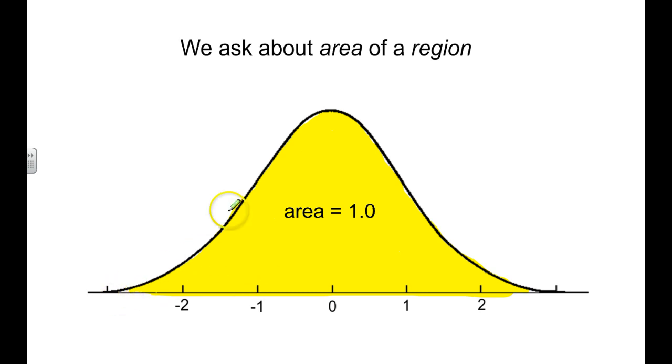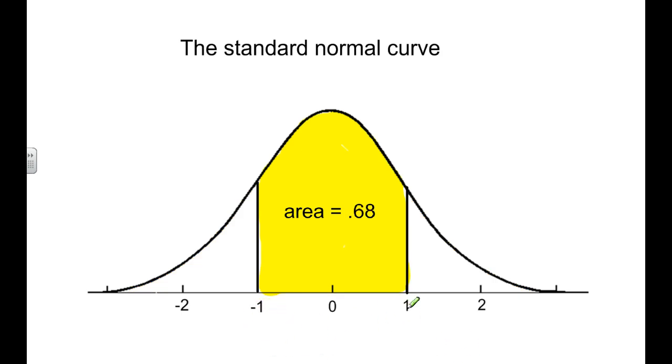Obviously, under the entire curve, the probability is going to be 1.0, or 100%. If we were to take smaller sections, though, common sections, let's say between negative 1 and 1 standard deviation, the area trapped between those two parts of the curve is 0.68, or 68% of the standard normal curve is within one standard deviation of the mean.